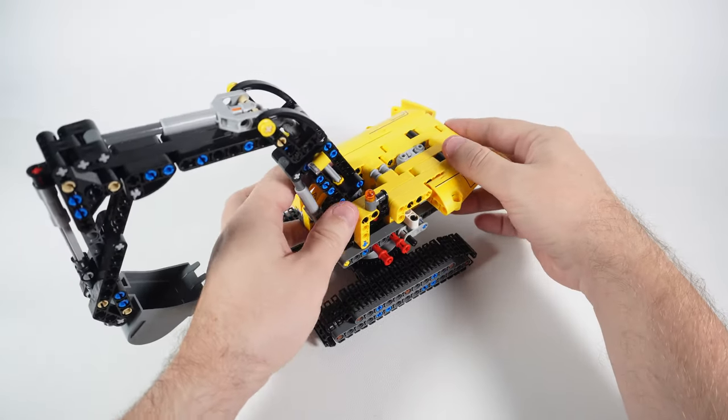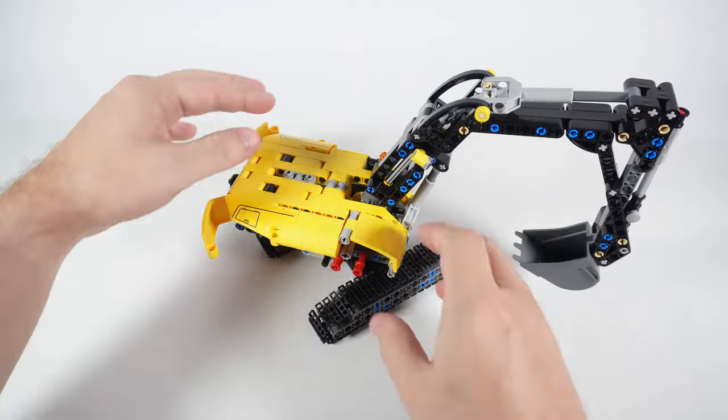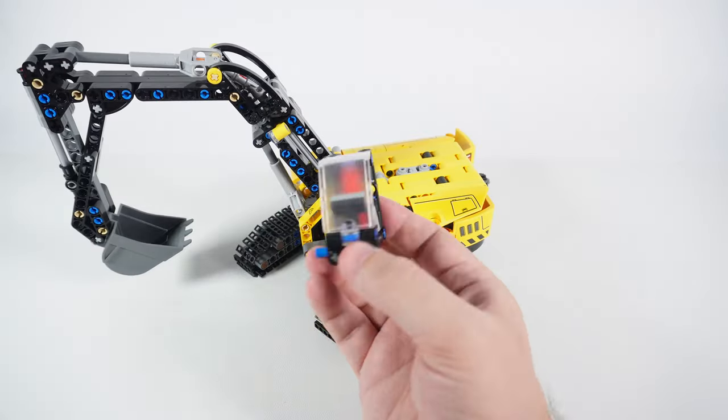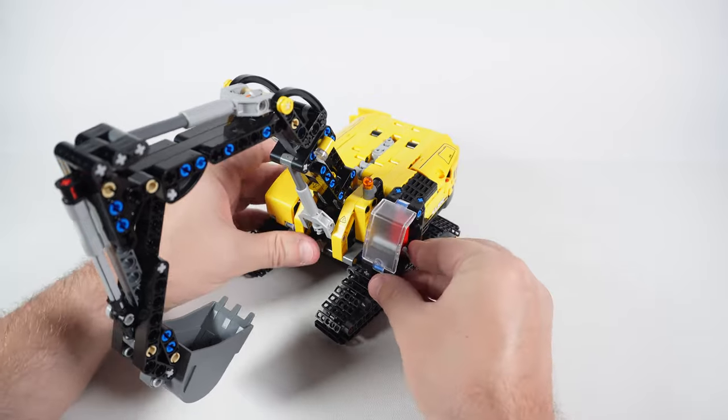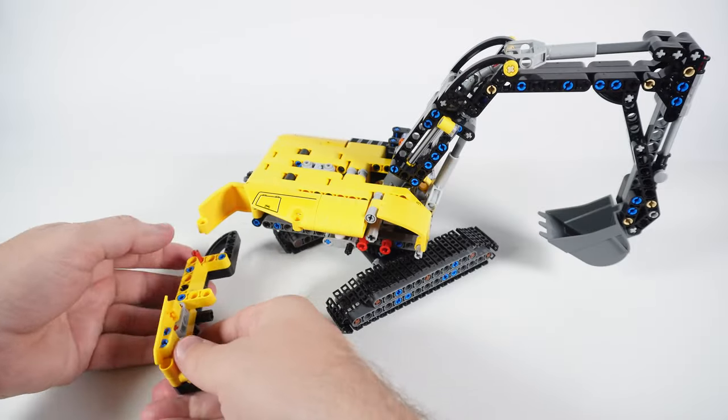Here we also install the turntable that allows our excavator to turn its body separately from the undercarriage 360 degrees in any direction. The second and fourth stages are where you're mostly working on the body itself, applying stickers, building a counterweight and adding small details.